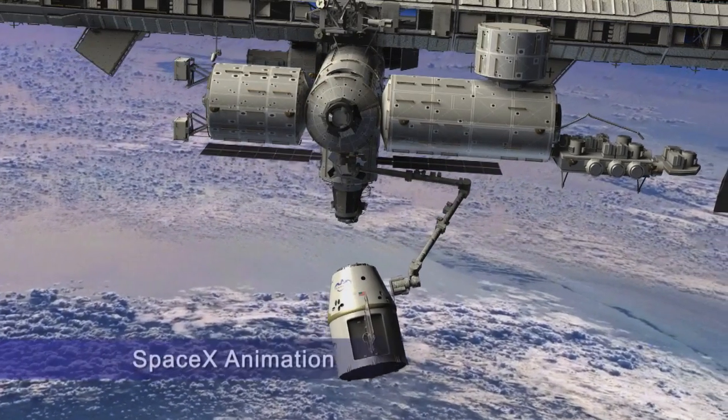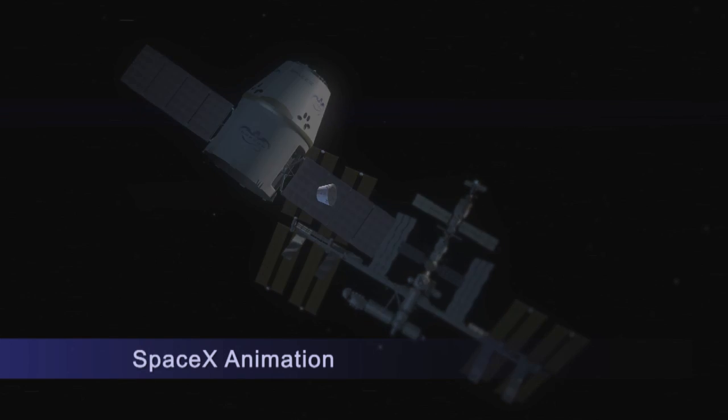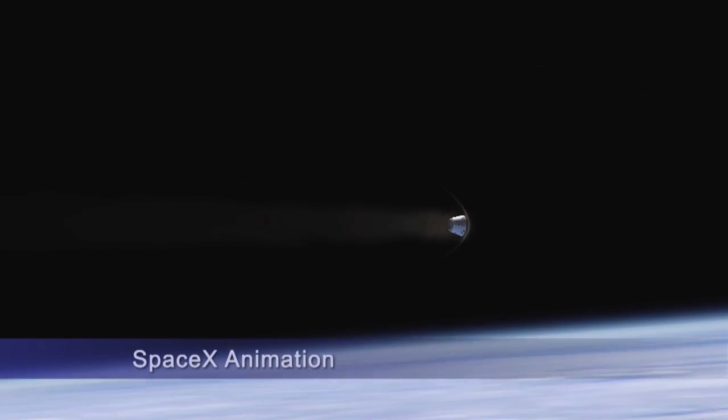When the SpaceX Dragon spacecraft returns to Earth after its mission to the International Space Station, it will depend on a heat shield material called PICA-X to protect it during reentry.